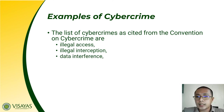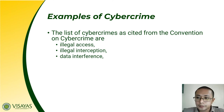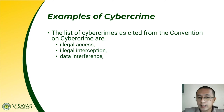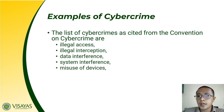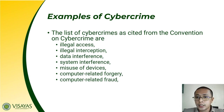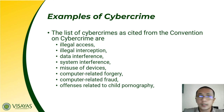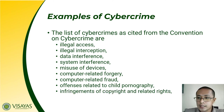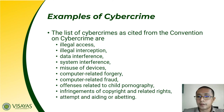Data interference means capturing data while it is being transmitted and making changes — for example, intercepting data from a PCOS machine and changing the result of an election. System interference is changing the capability of a computer system. Misuse of devices and computer-related forgery — copying or modifying data — are also listed. Computer-related fraud involves deceptions online. Offenses related to child pornography, infringements, attack rights, and related rights are also examples of cybercrime.